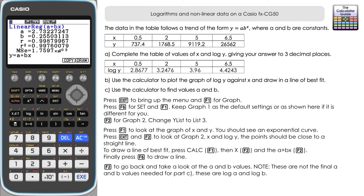We're going to need these values for a calculation. Unfortunately pressing Copy just copies the linear graph into graph mode. The easiest way is to write down the full calculator display values and re-enter them. Take a moment to write those down — comment below if you know how to store these variables more conveniently.